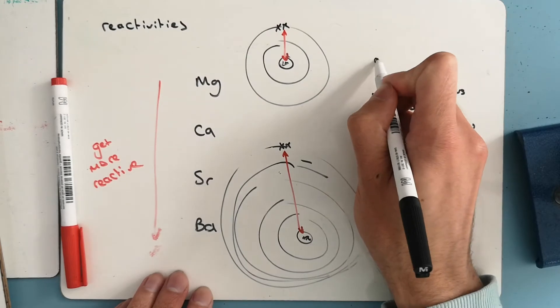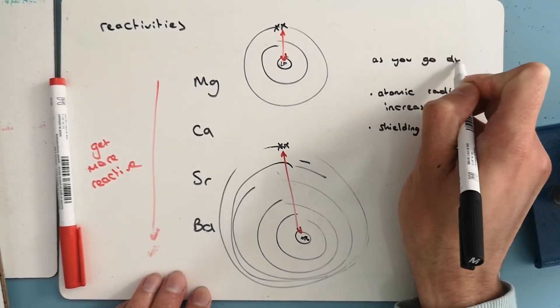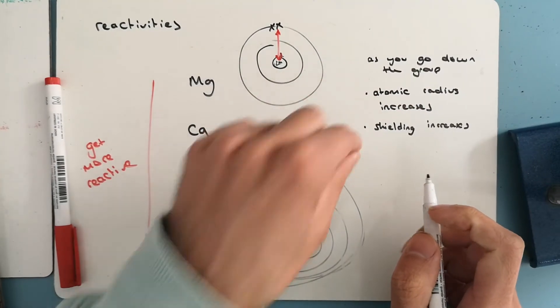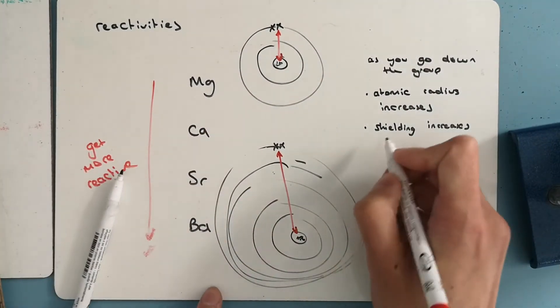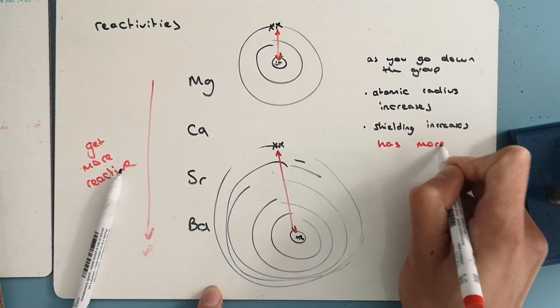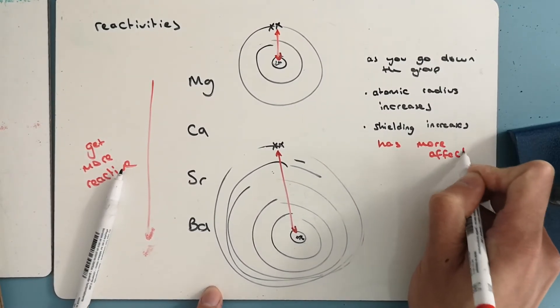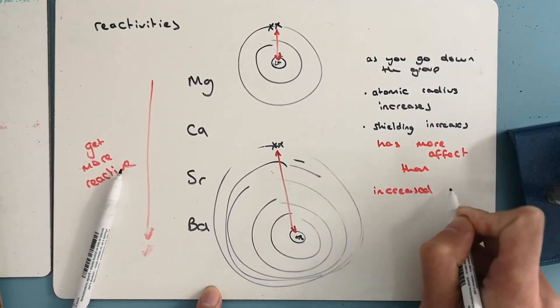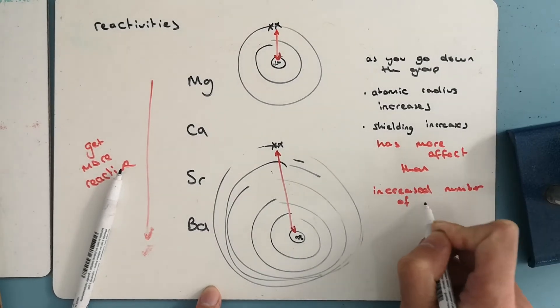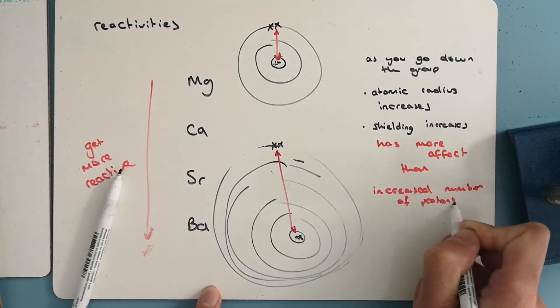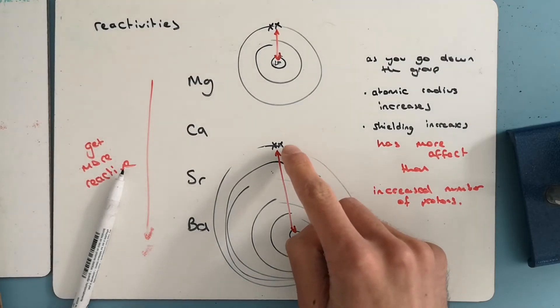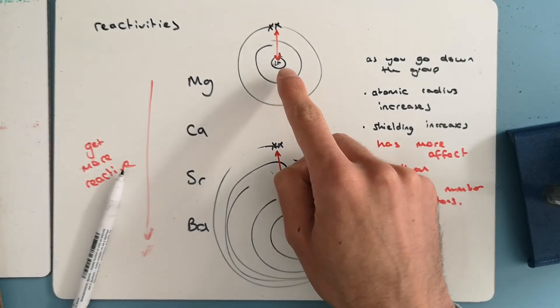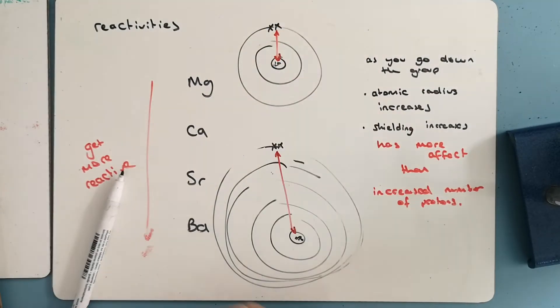So as you go down the group, this atomic radius and shielding increase, and this has more effect than increased number of protons. So the nuclear attraction between these electrons and that nucleus is smaller than the nuclear attraction between these protons and those electrons.